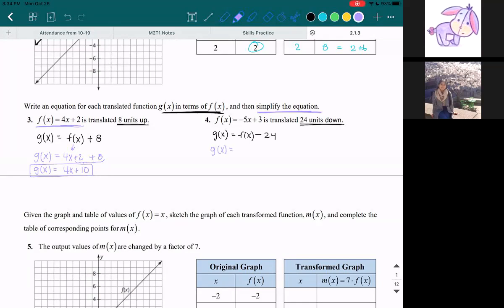So write g(x) again is equal to f(x), we're going to change it to this. What is f(x) equal to, -5x + 3, and then we have our minus 24.